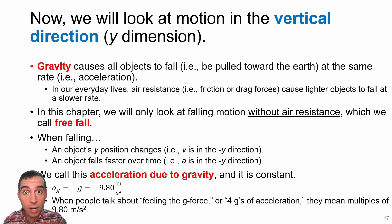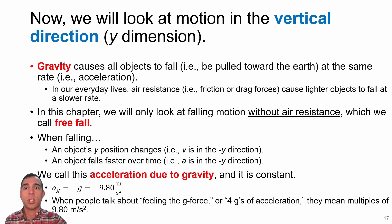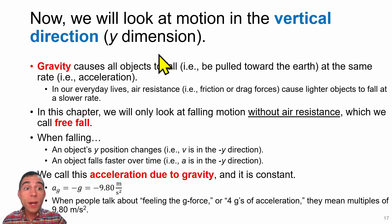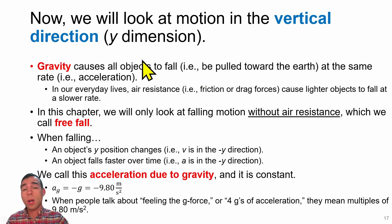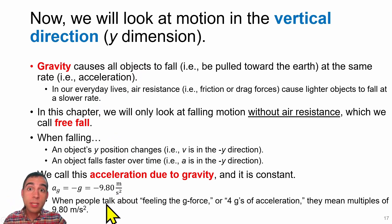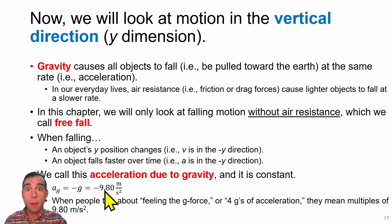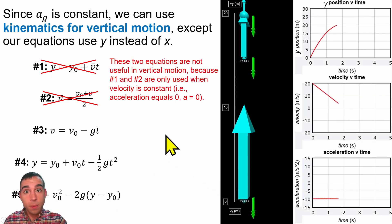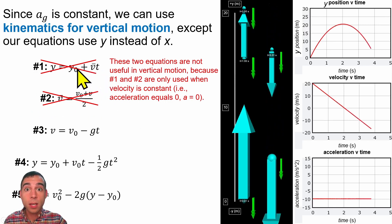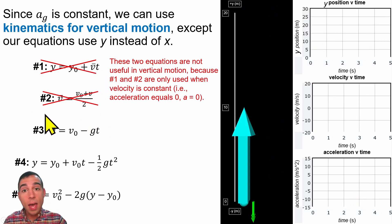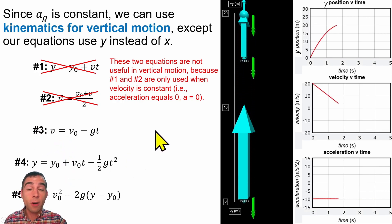But we can also do this in the vertical direction—there's nothing stopping us from using these equations for the y direction instead of the x direction. So if we're talking about vertical position, we'll denote that with the letter y instead of x. One example of vertical motion is an object experiencing freefall, meaning gravity is the only thing acting on it—we're not going to worry about wind resistance. When an object is in freefall, it experiences an acceleration due to gravity equal to negative 9.8 meters per second squared. In the vertical case, we do not have constant velocity, so we can't use kinematic equations 1 and 2, but we can use equations 3, 4, and 5 to solve for a variable of interest.